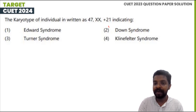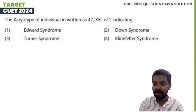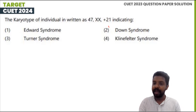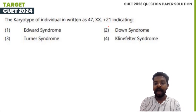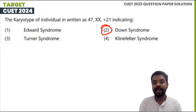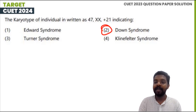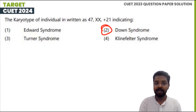The trisomy of 21 is Down syndrome. The correct answer is option 2 — Down syndrome.